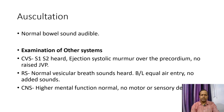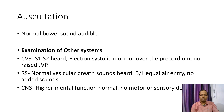Examination of other systems: Cardiovascular system — both heart sounds S1 and S2 audible; an ejection systolic murmur over the precordium was audible; no raised JVP. Respiratory system — normal vesicular breath sounds heard, bilateral equal air entry present, no added sounds. Central nervous system — higher mental functions are normal and there is no motor or sensory deficit.